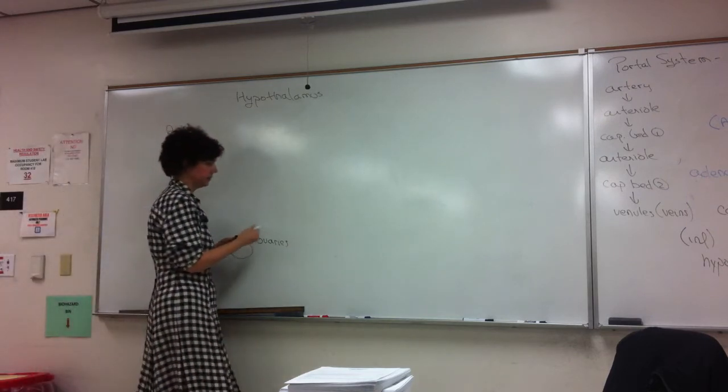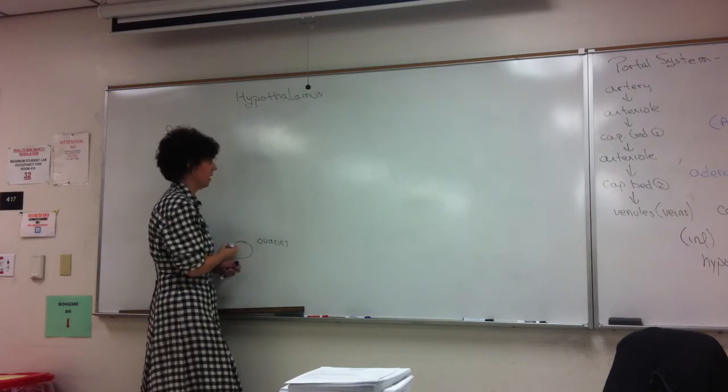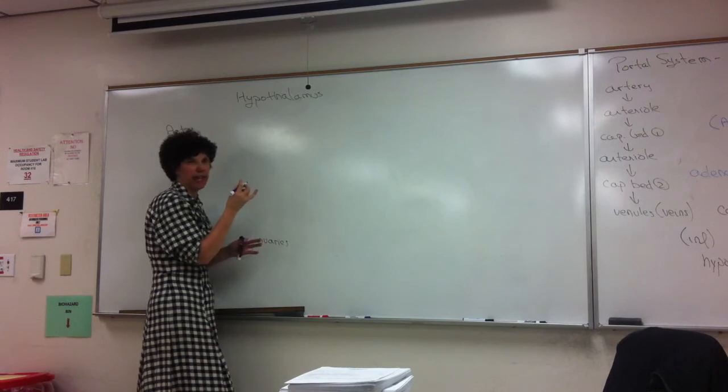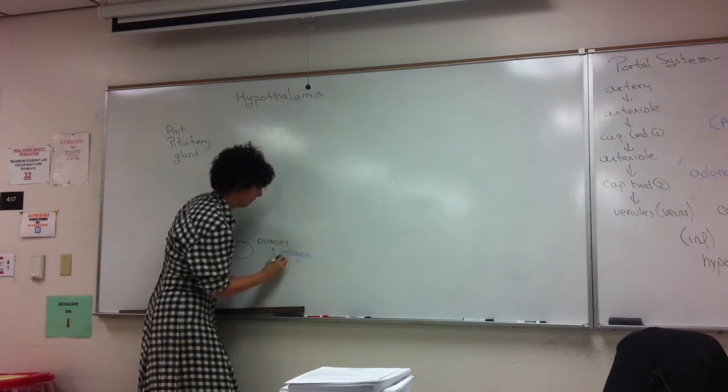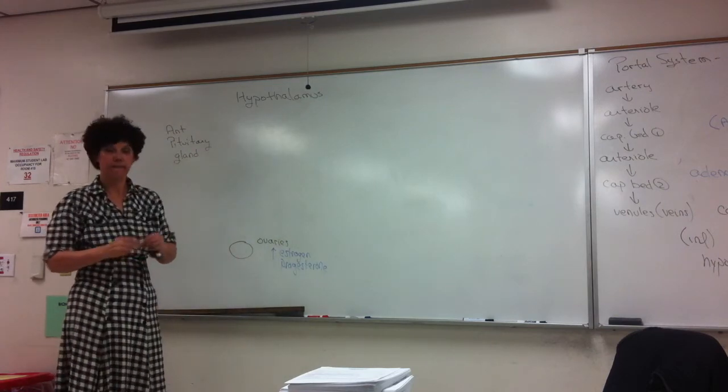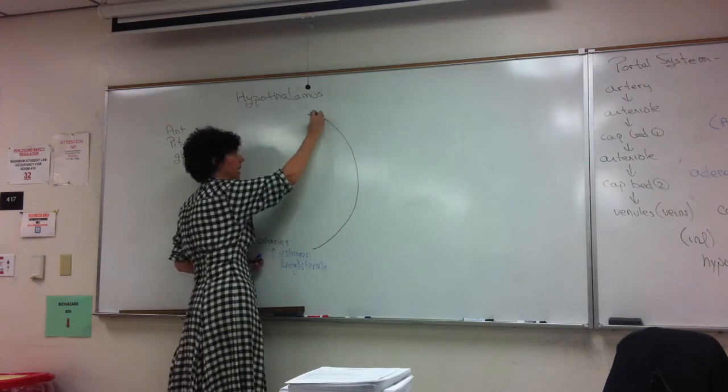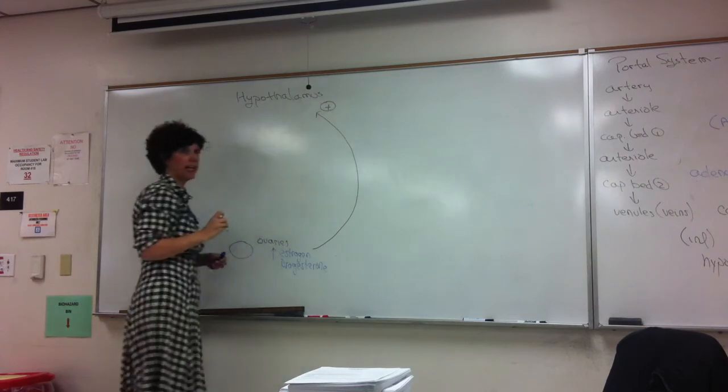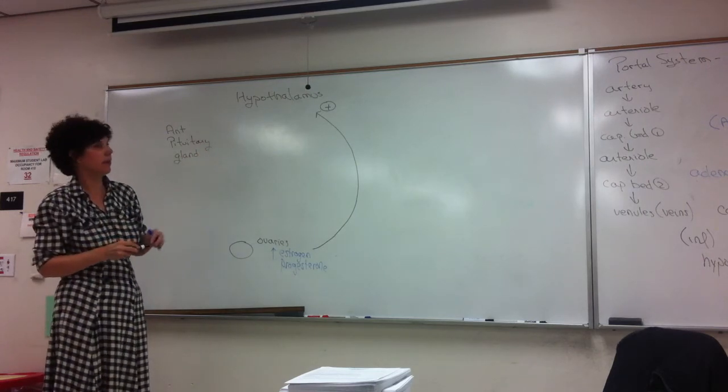Since we're doing reproductive system, let's look at estrogen and progesterone components. We're going to look at a series of feedback levels. This is a cycle, so I suppose we could start with the hypothalamus, but I want to emphasize something, so I'm going to start with the ovaries. Let's say we're near the first week after ovulation or so, and we have elevated levels of estrogen and progesterone.